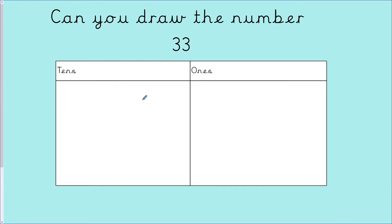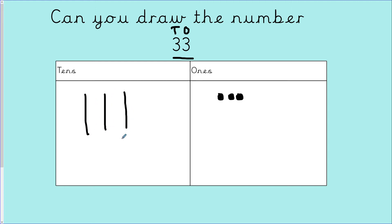This time you're going to have a go. The number is thirty-three. Let's label the columns. Please draw the number thirty-three on your whiteboards — off you go. Let's have a look together. Starting with the ones column: how many ones? Three. One, two, three. How many tens? Three tens. I'll draw three lines: one, two, three lots of ten. Ten, twenty, thirty, thirty-one, thirty-two, thirty-three. Excellent, well done.